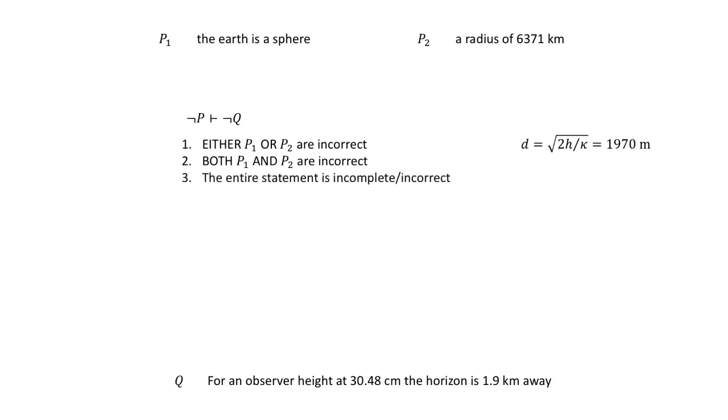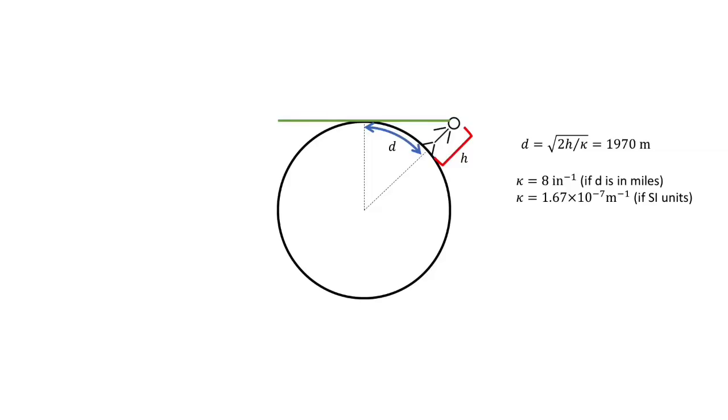You are completely missing the point. Considering how much of a passion you have for formal logic, you clearly don't understand it. The distance to the horizon quoted in the problem statement is the distance to any point where a line tangent to the surface of the earth intersects the observer's eye — this is what we refer to as the geometric horizon. It is the horizon we would observe if and only if the earth were a featureless sphere with no atmosphere.